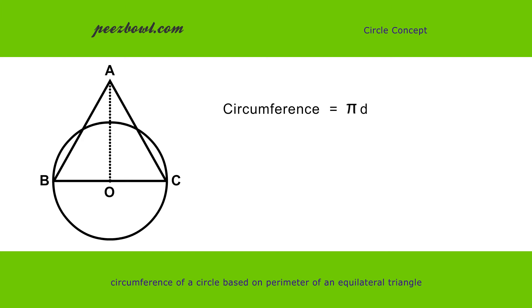Circumference equals pi D, which is 3.14 multiplied by 14 cm. Result of this multiplication is 43.96 cm.